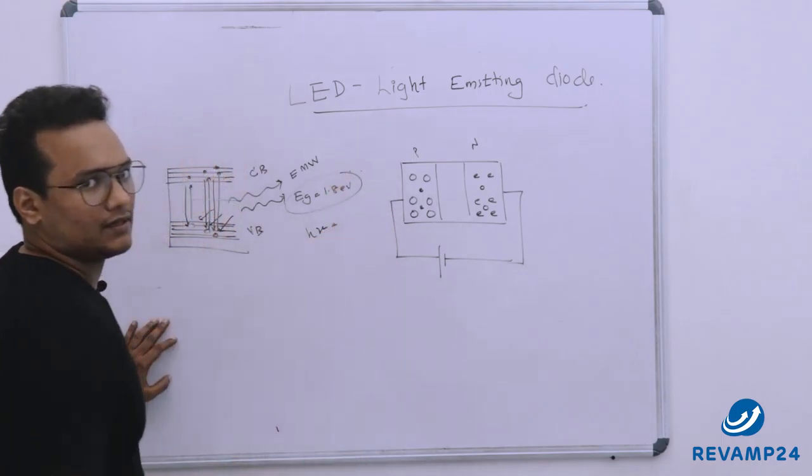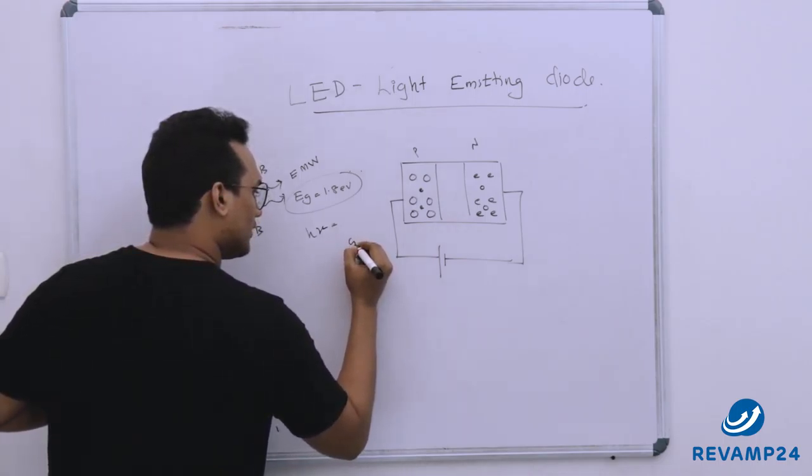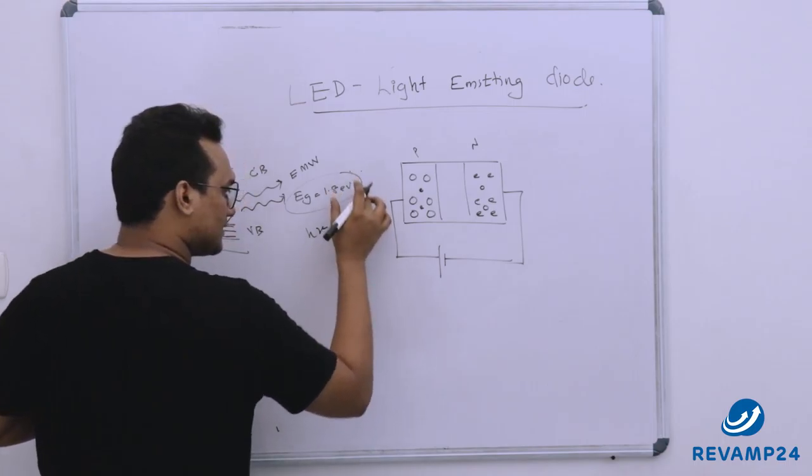So we know the spectrum right? So only in the visible spectra that is violet, indigo, blue, green, yellow, orange, red. These are visible to us.